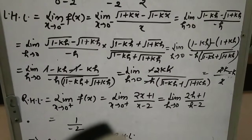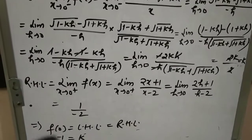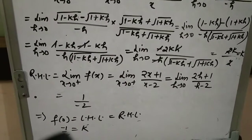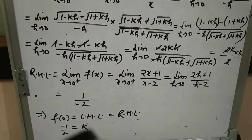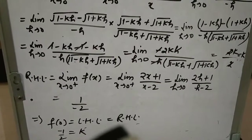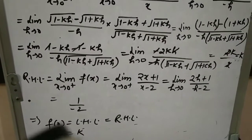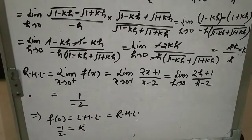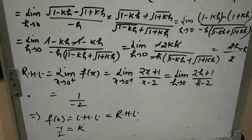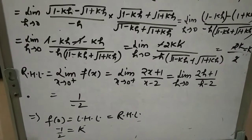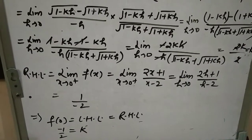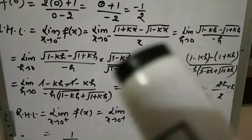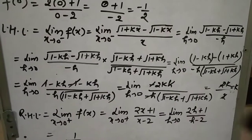For f to be continuous at x = 0: f(0) must equal left hand limit and that must equal right hand limit. f(0) = -1/2, left hand limit = k, right hand limit = -1/2। So k = -1/2। At k = -1/2, f(x) is continuous at x = 0। याद रखना: जब indeterminate form बने और root में हो तो rationalize करेंगे।